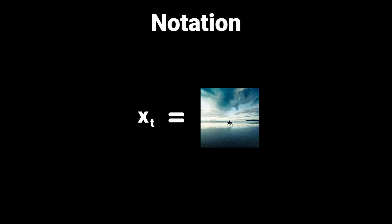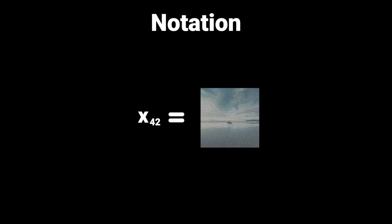Let's start with some basic notation. We'll define our image as x with a number as a subscript indicating the time step. So x₀ refers to the original image, and as time passes and we add more and more noise, this number increases. For example, x₄₂ will be our image after applying 42 iterations of noise. The final image, which follows an isotropic Gaussian, will be called x_T. T also varied throughout the papers — initially it was set to 1000, but follow-up papers were able to decrease this number to just a fraction.